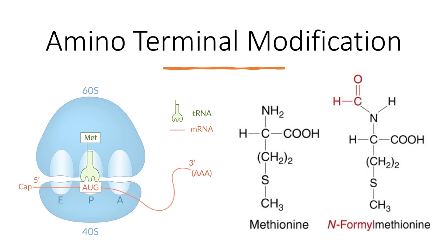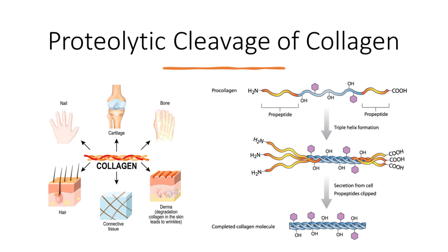As we know, when the process of translation starts, the first start codon — AUG — codes for methionine in a eukaryotic organism, or formyl-methionine in a prokaryotic organism. In both situations, methionine is the first amino acid generated in a protein. However, in a protein like collagen, there is no methionine.